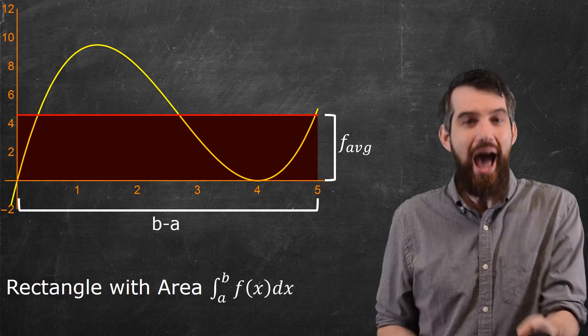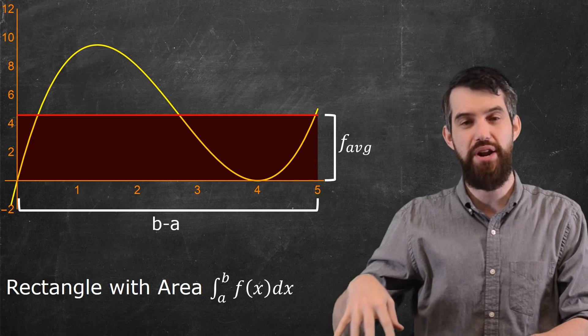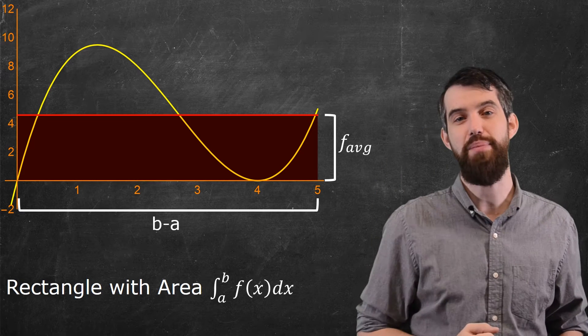So really what the average does is it takes some curve thing that has some weird area underneath it, and it replaces that with a simple rectangle with the exact same area.